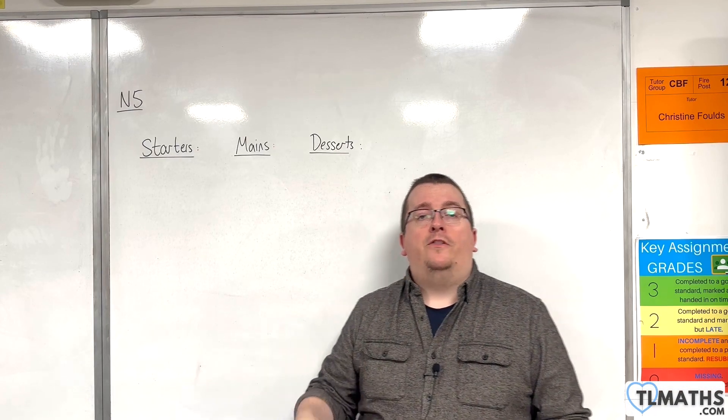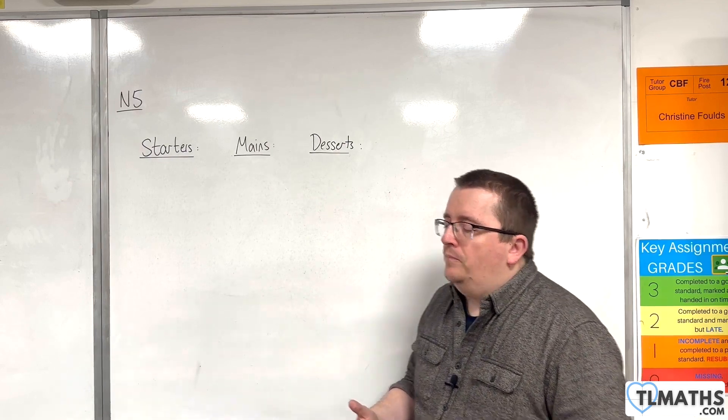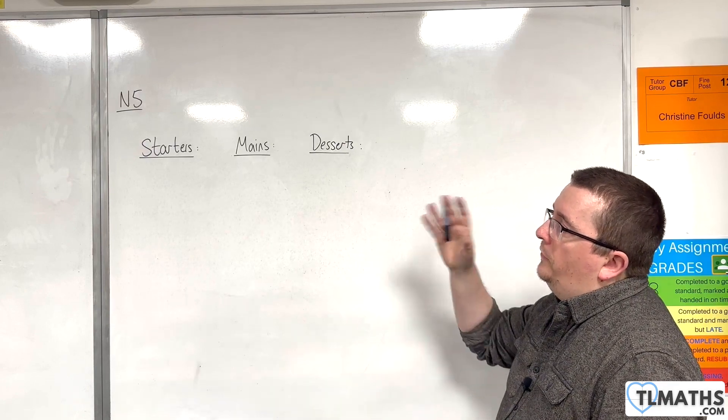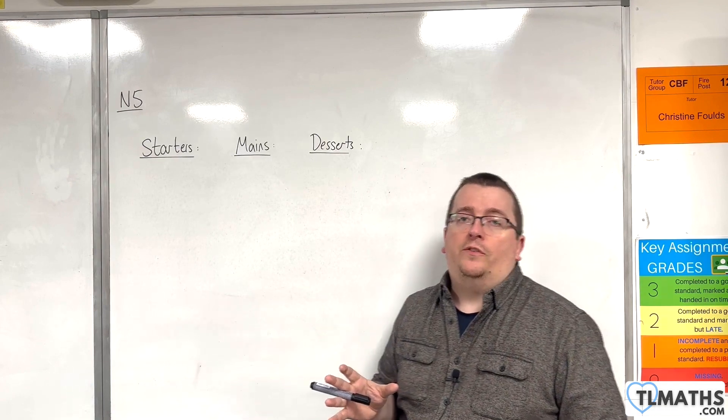So, in this video, I want to talk about the product rule for counting. Now, a couple of videos ago, we looked at an example where we had two starters, three mains, and two desserts, and we worked out how many different combinations there were.